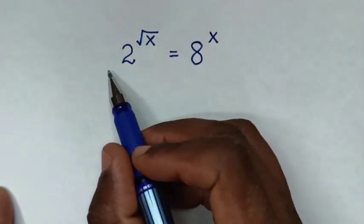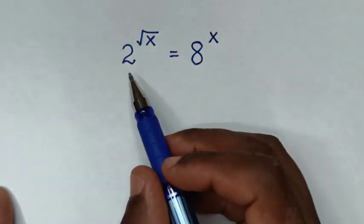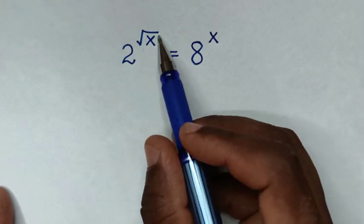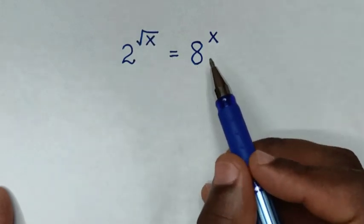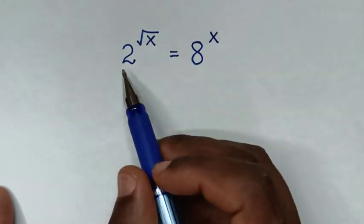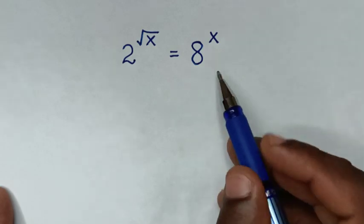Hello, you are welcome to solve this math problem, which is 2 power of square root of x is equal to 8 power of x. To find the value of x from this equation.